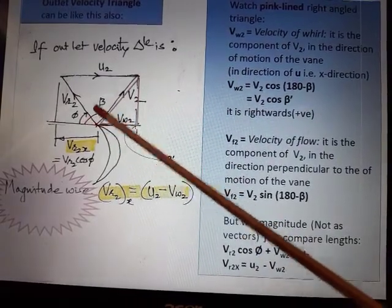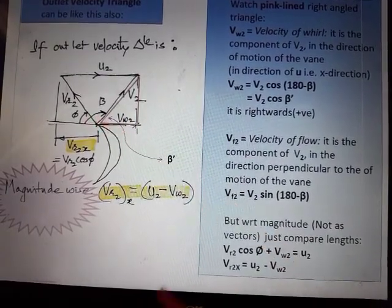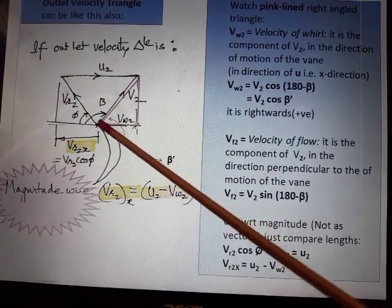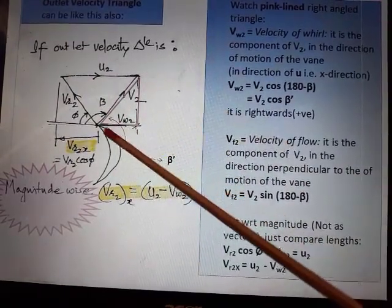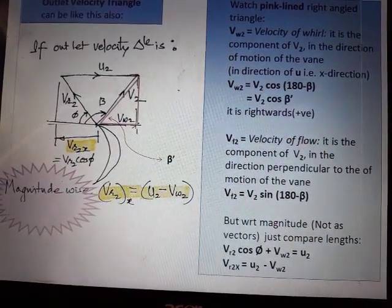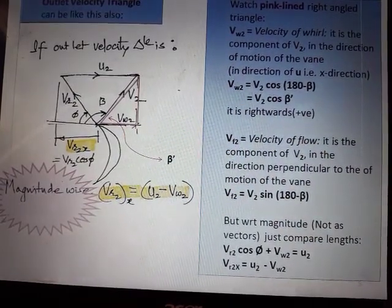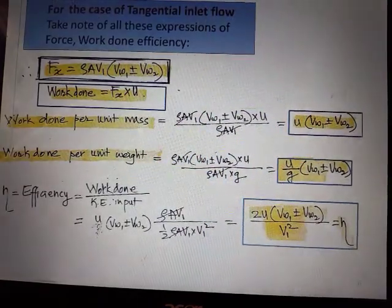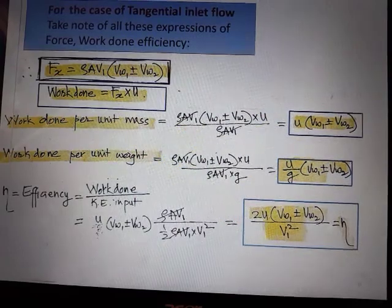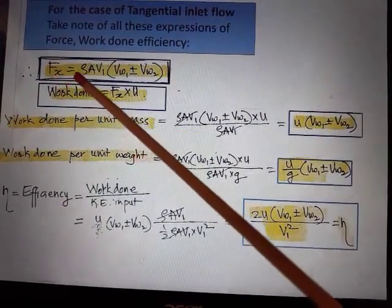And let us go to the next slide. Here if the angle beta goes beyond 90 degrees, how the velocity triangle looks, how Vw2 will be - that is velocity of whirl, velocity of flow.